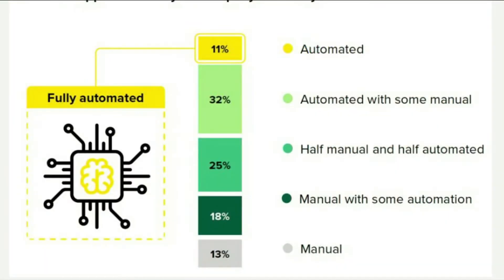This next article is by the folks at Keysight, on research they did on different organizations and their automation testing efforts. One finding was about what test approach companies use: 11% said they have a fully automated approach, 32% say automated with some manual, 25% say half manual and half automated, 18% said manual with some automation, and 13% are still fully manual. This study shows that automation is gaining inroads with 75% of organizations using a combination of automated and manual testing, though only 11% have a fully automated strategy.